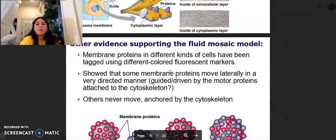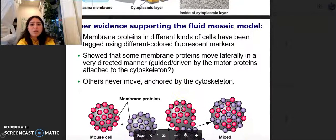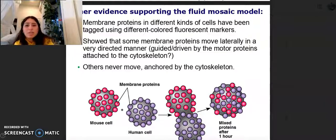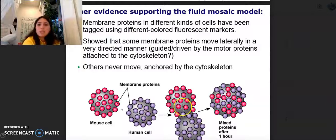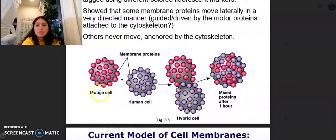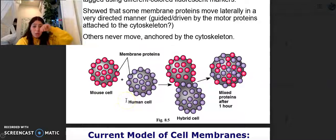Other evidence supporting the fluid mosaic model: membrane proteins in different kinds of cells have been tagged using different color fluorescent markers. Some showed that membrane proteins move laterally in a very directed manner, guided and driven by motor proteins attached to the cytoskeleton. Others never move, anchored by the cytoskeleton. Here's a mouse cell, here's a human cell, here's the mixed proteins after one hour.